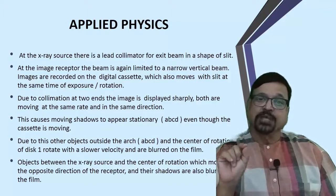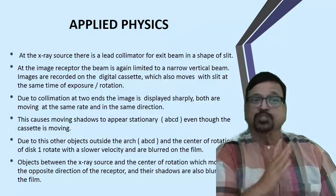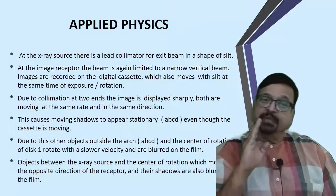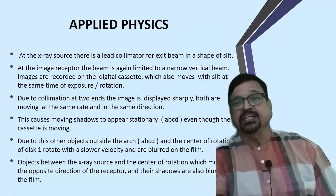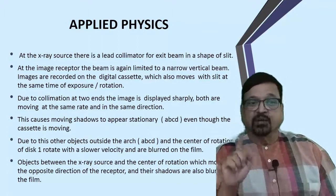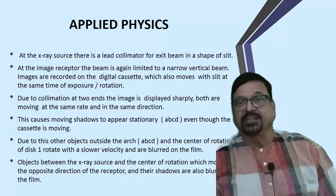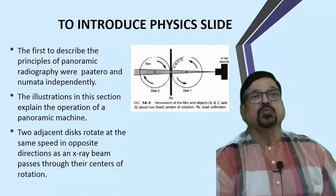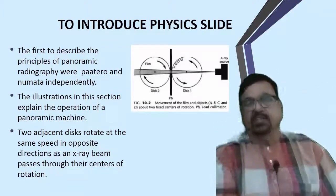To understand this, consider an illustrative diagram in which objects A, B, C, D are marked as the objects to be radiographed. Due to other objects outside the A-B-C-D arch - possibly at the center of rotation - the movement is not at the same speed as objects A, B, C, D. So only A, B, C, D will be clearly focused. Objects between the X-ray source and the center of rotation, as well as objects in the background that move in the opposite direction, will have blurred shadows.